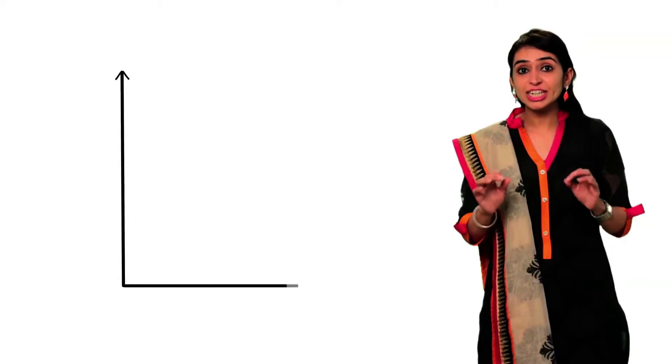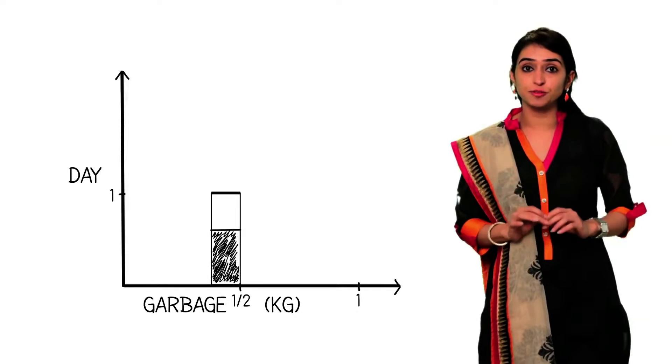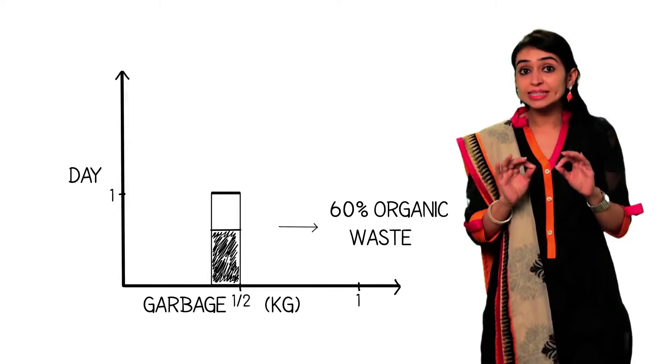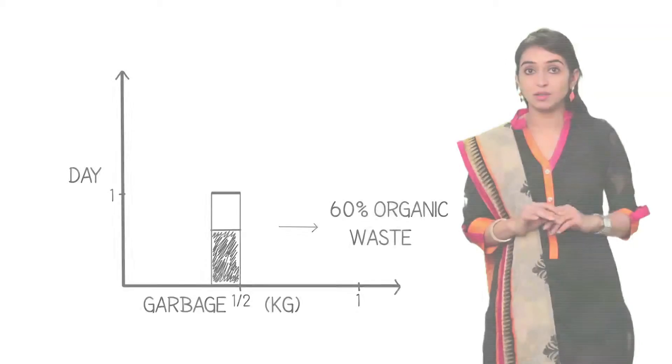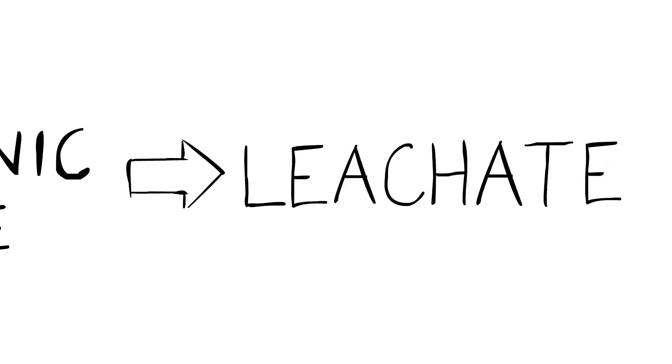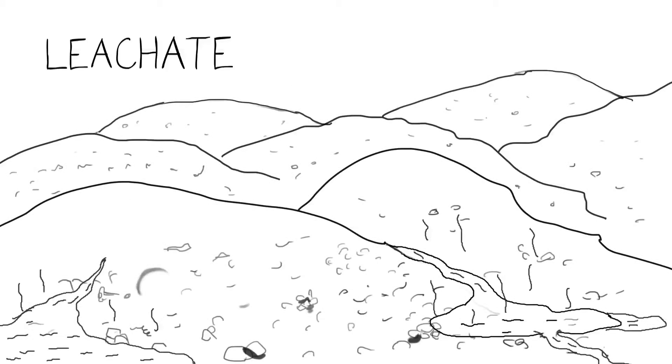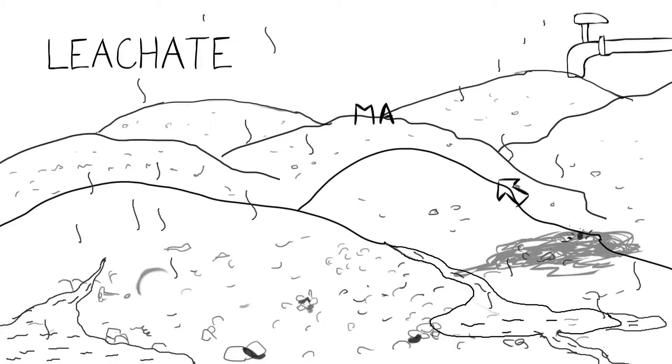On an average, each one of us generates half a kg of garbage daily, out of which approximately 60% is organic waste. This organic waste creates a liquid called leachate, which releases harmful odour and is also one of the largest causes for diseases like malaria and diarrhea and other bigger diseases when in large quantity.